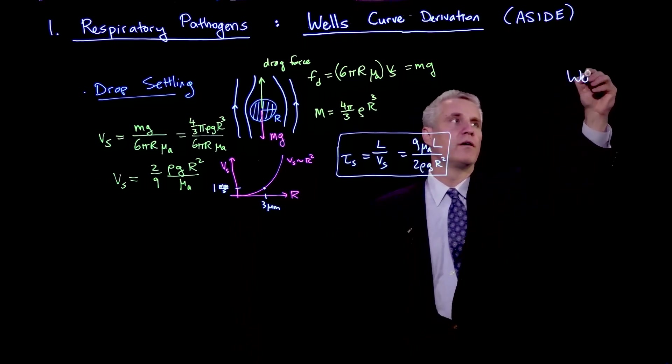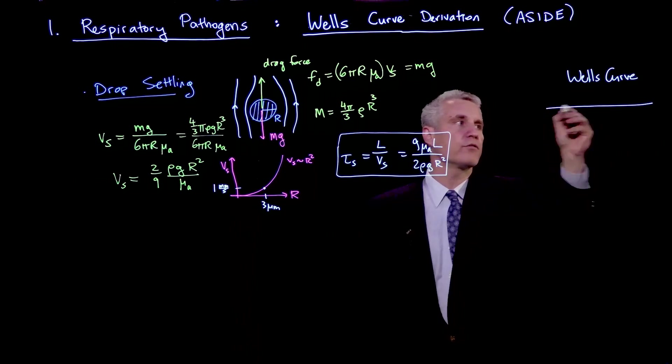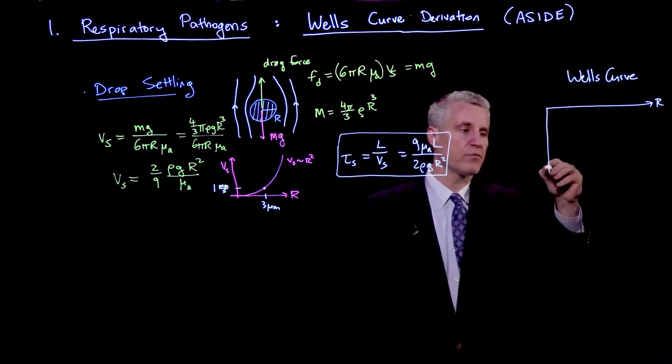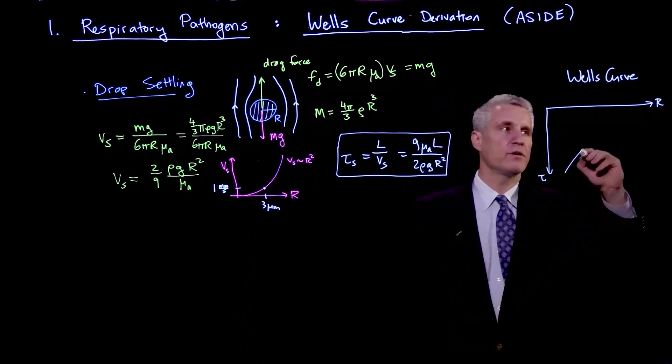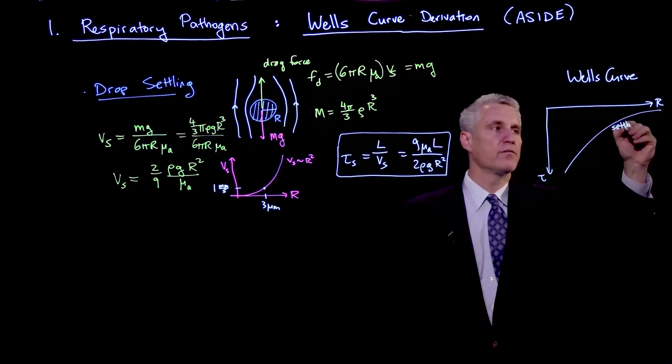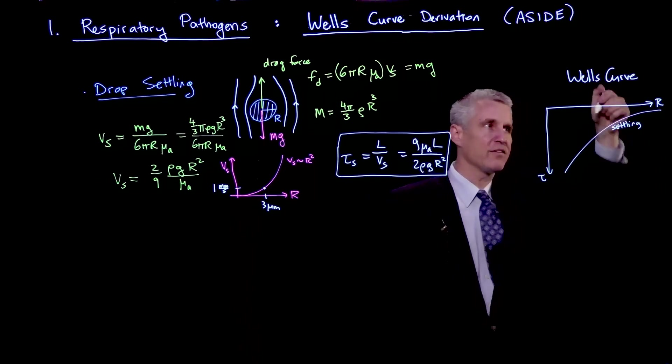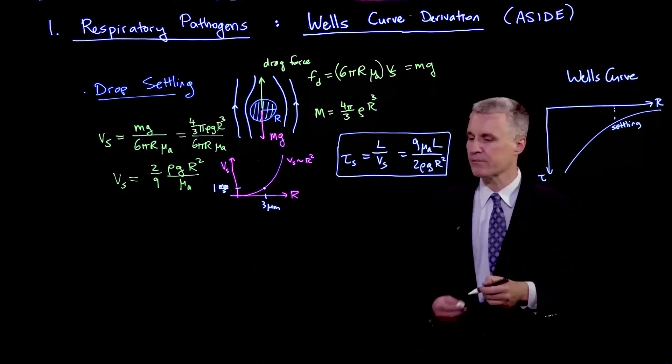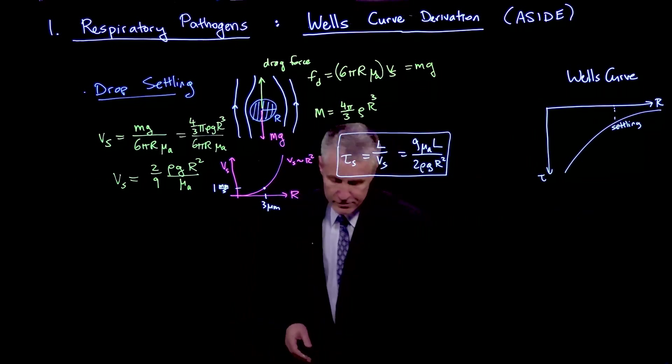If I draw the Wells curve over here in the traditional way, where I plot on the horizontal axis the size of the particle, and in a downward axis we draw the time, then we have a curve like this for settling. The reason it's drawn down, I guess, is the feeling that as you're falling down a particle a certain size, you hit this curve, and that's when you've settled a distance L and fallen out of the air. So now let's look at evaporation, which is our second topic.